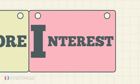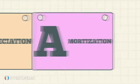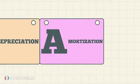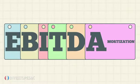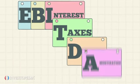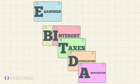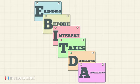Earnings before interest, taxes, depreciation, and amortization, or EBITDA, is the total sum of those four deductions added back to the net income.